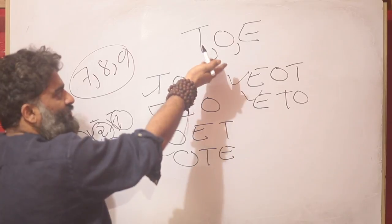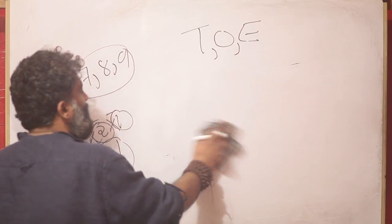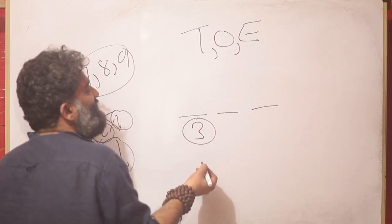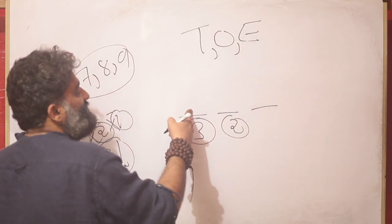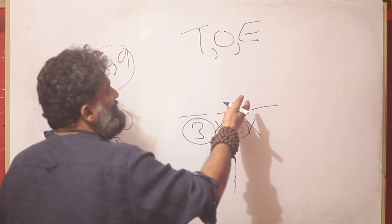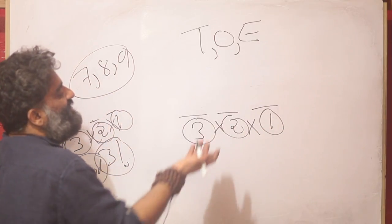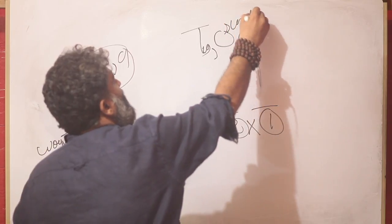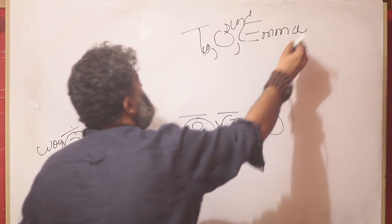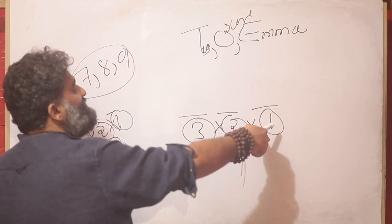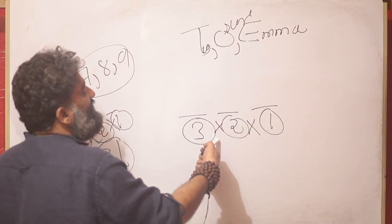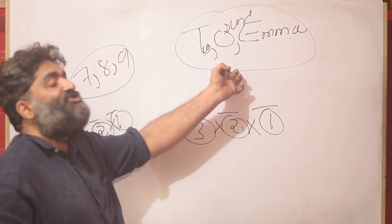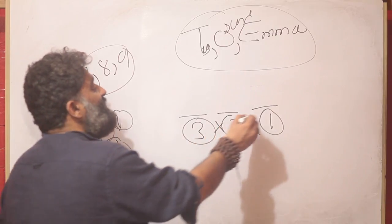The same logic applies for arranging letters — it is identical to the problems we have seen so far. If I say in how many ways can I form a 3-letter word, for the first position I have 3 possibilities: T, O, or E. One goes to the first position, leaving 2 for the next, and 1 for the last. This is the same as arranging 3 friends — Tushar, Oscar, and Emma — into 3 positions. The fundamental logic is the same.